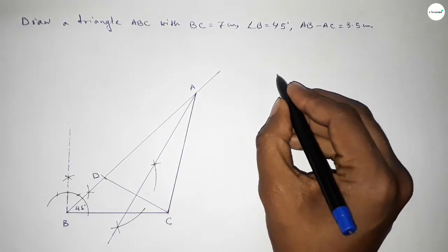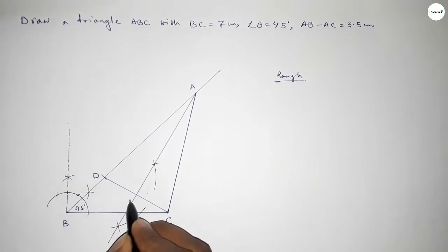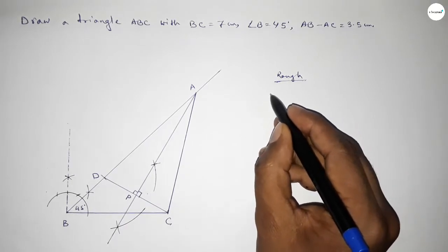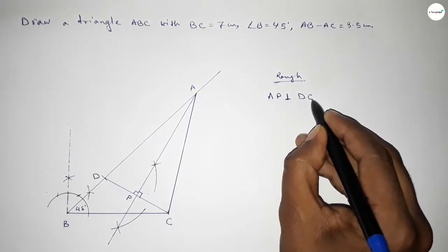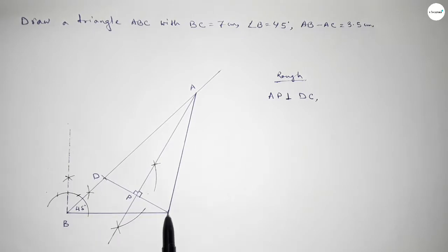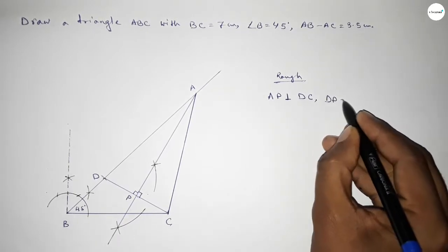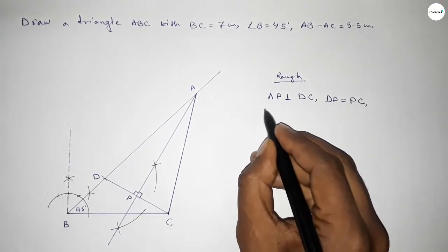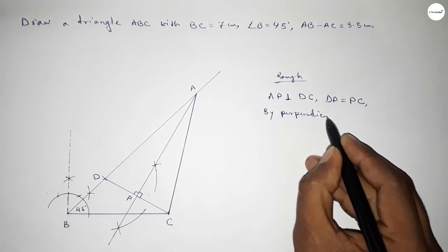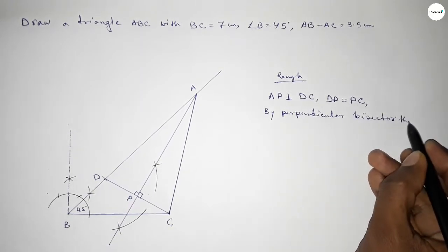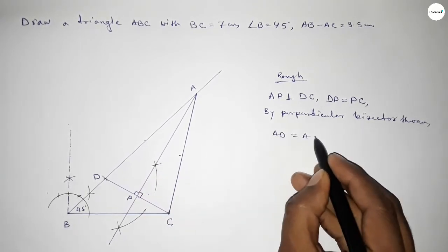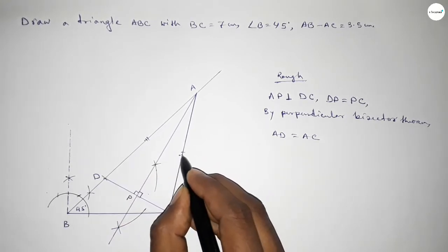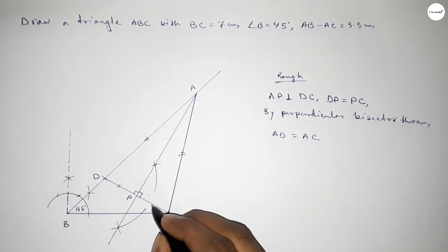Now roughly discussing some calculation: taking point P, this is the perpendicular symbol — AP is perpendicular to DC. This bisects the line DC equally, so distance DP equals PC. By the perpendicular bisector theorem, we can say that the lengths AD and AC are equal — so AD equals AC.